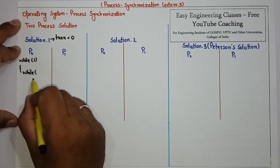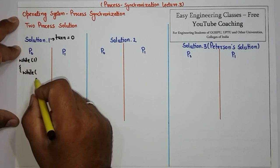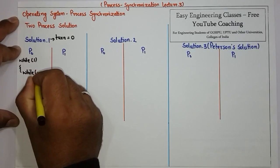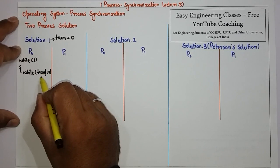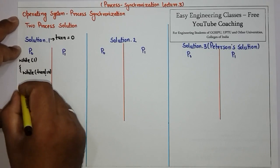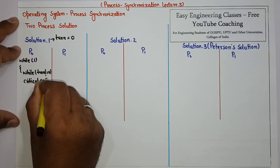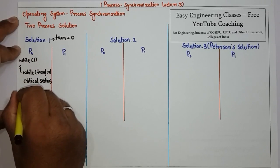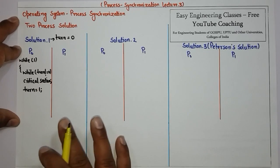In the while loop, the process checks whether it is allowed to enter the critical section. The condition is: while turn is not equal to zero — if turn is not equal to zero, a trap occurs and P0 is not allowed to enter. Below that is the critical section, and in the exit section, P0 sets turn equal to one, meaning process P1 can now enter its critical section.